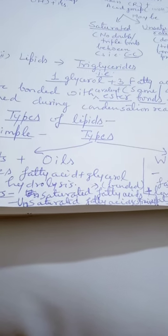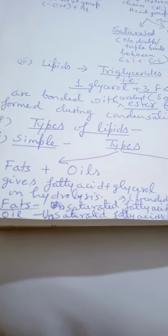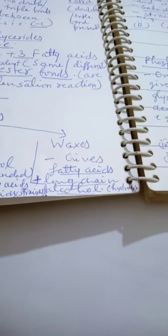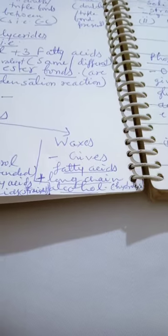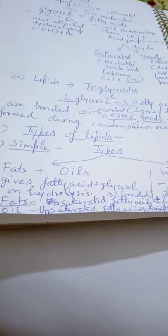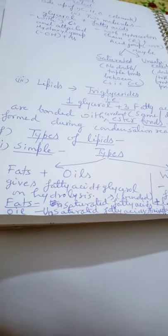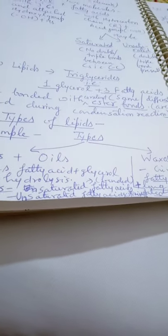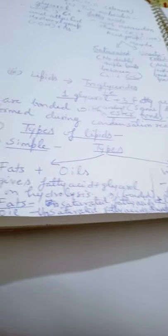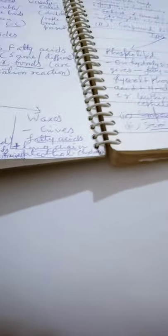The unsaturation — presence of double bonds between carbon atoms — imparts the liquid nature to the lipid, while saturation imparts the solid nature. Wax, the harder form of lipid, gives fatty acid and long-chain alcohol on hydrolysis. So lipids can exist in three forms: totally liquid like oils, harder than liquid like fats, and the hardest form — waxes.